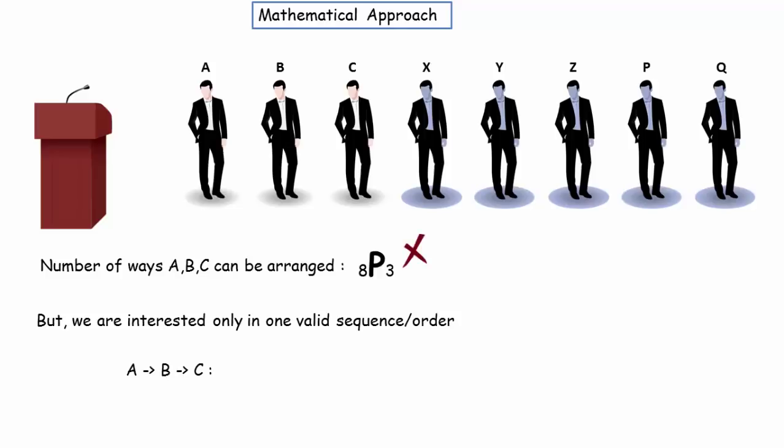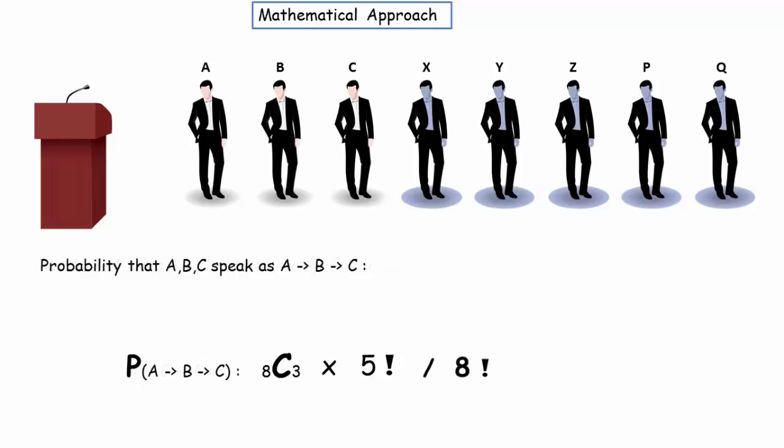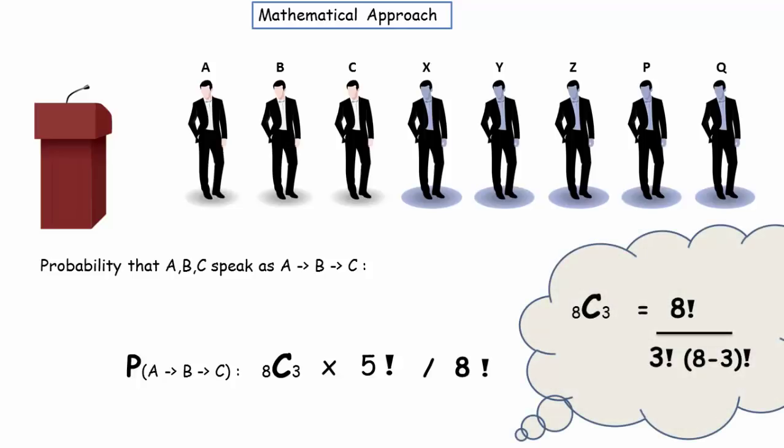So, instead of permutations, we have to consider combination which can be applied to one particular sequence. The remaining 5 persons can be arranged in 5 factorial ways. So, the probability of this valid sequence is number of valid arrangements divided by total number of arrangements that's 8 factorial. Using simple combination formula, cancel out the common terms and the final result will be 1 by 6.